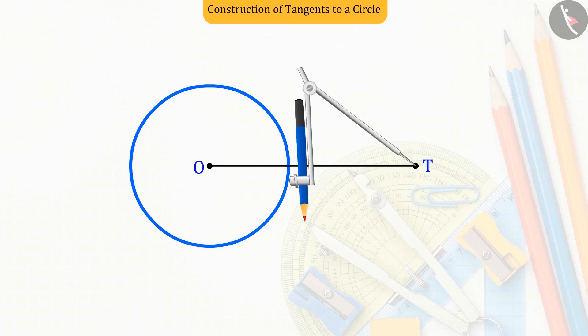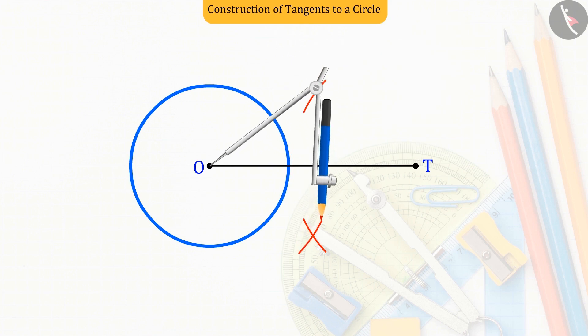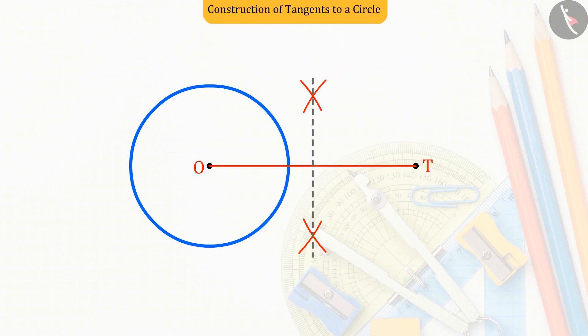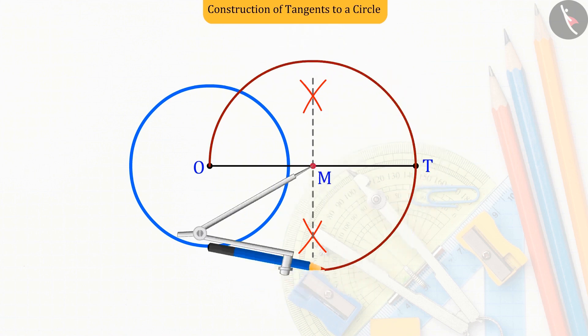So now, let us bisect the drawn line segment that is OT, from which we get the midpoint M of the line segment OT, which divides the line segment OT into two equal parts OM and MT. The point M is the center and taking OM and MT as radius, let us draw a circle.